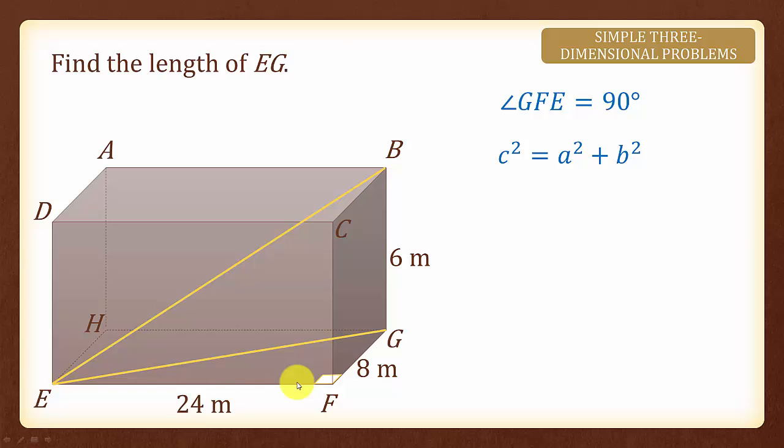Do you know what is the value of C, A and B? Yes, we have EG square which is the hypotenuse equals to 24 square plus 8 square. Simplifying we will have EG square equals to 640.